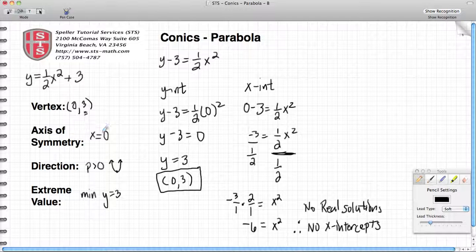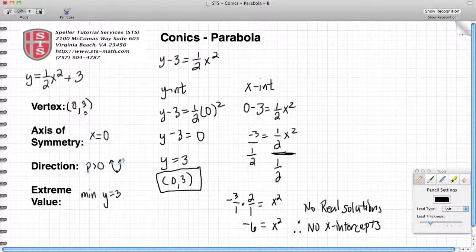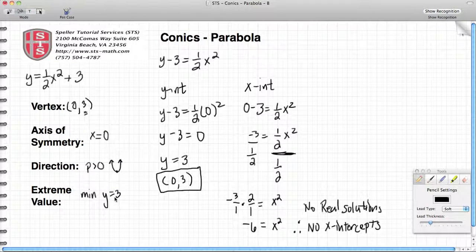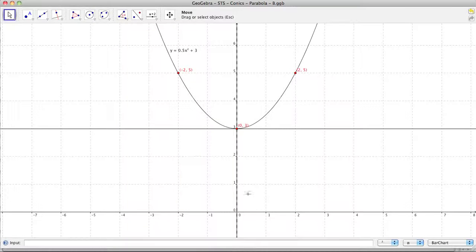Axis of symmetry is at x equals 0, which is along the y axis. We know that it should point up, and we know that the minimum y value that we should see is equal to 3. So let's switch to our drawing software, and I've pre-done that for us. Here we have the parabola defined y equals 0.5 x squared plus 3. 0.5 is the same thing as 1 half, so this here is the parabola.